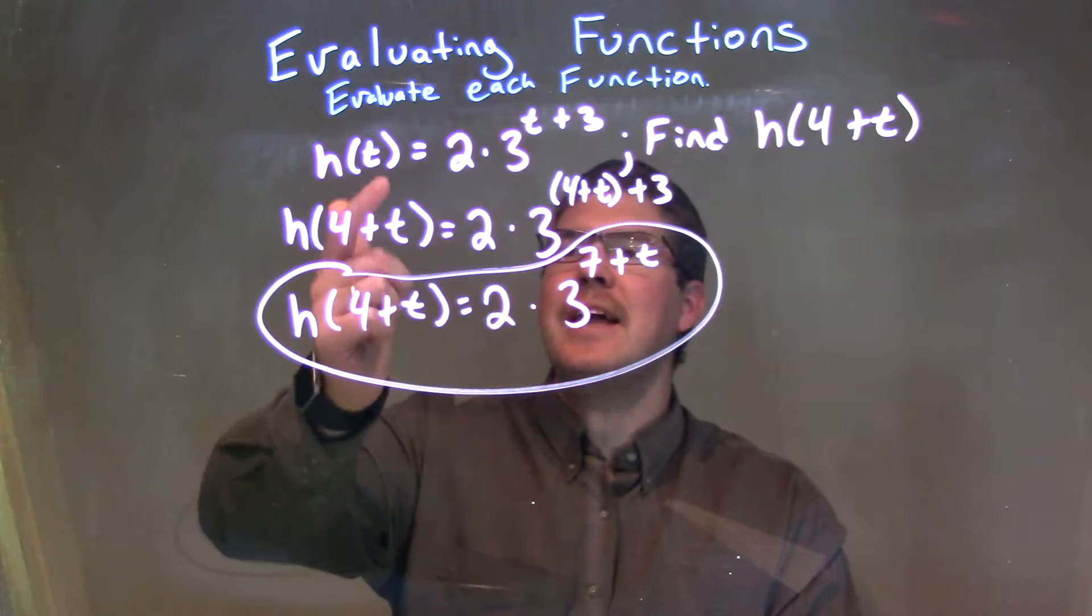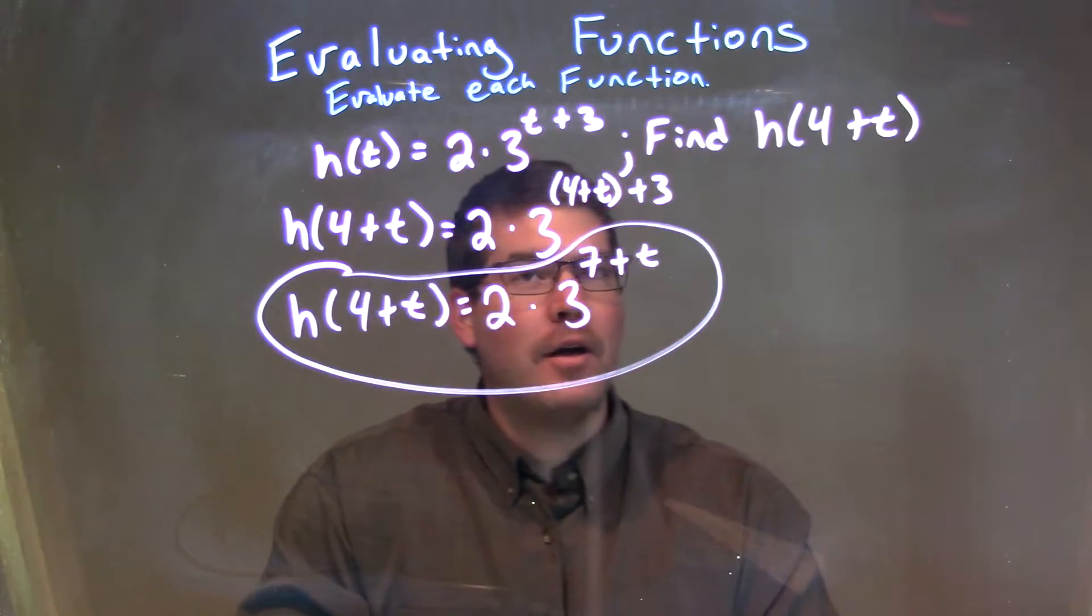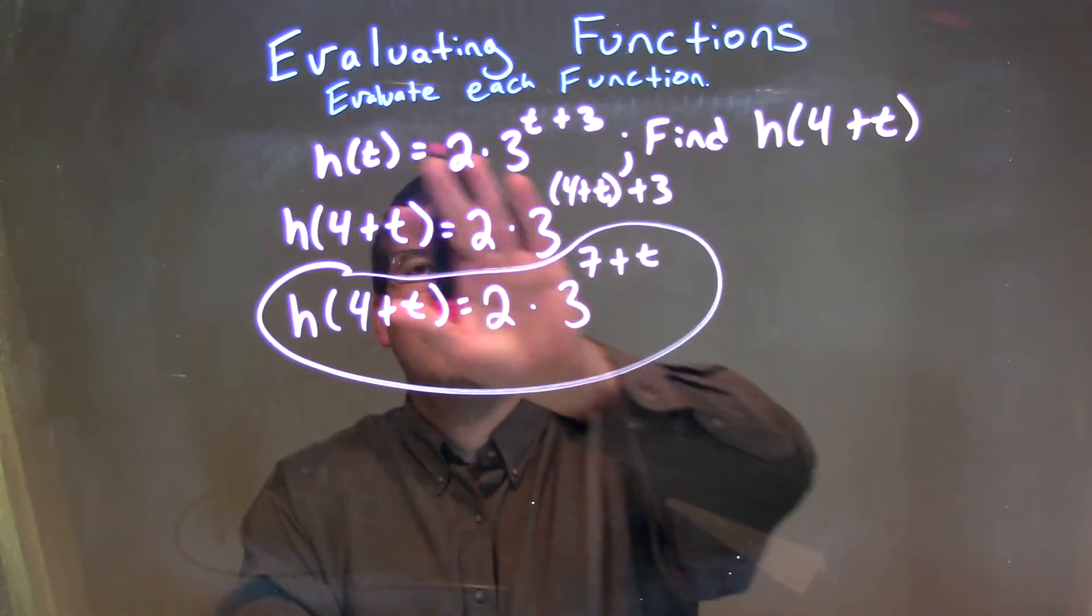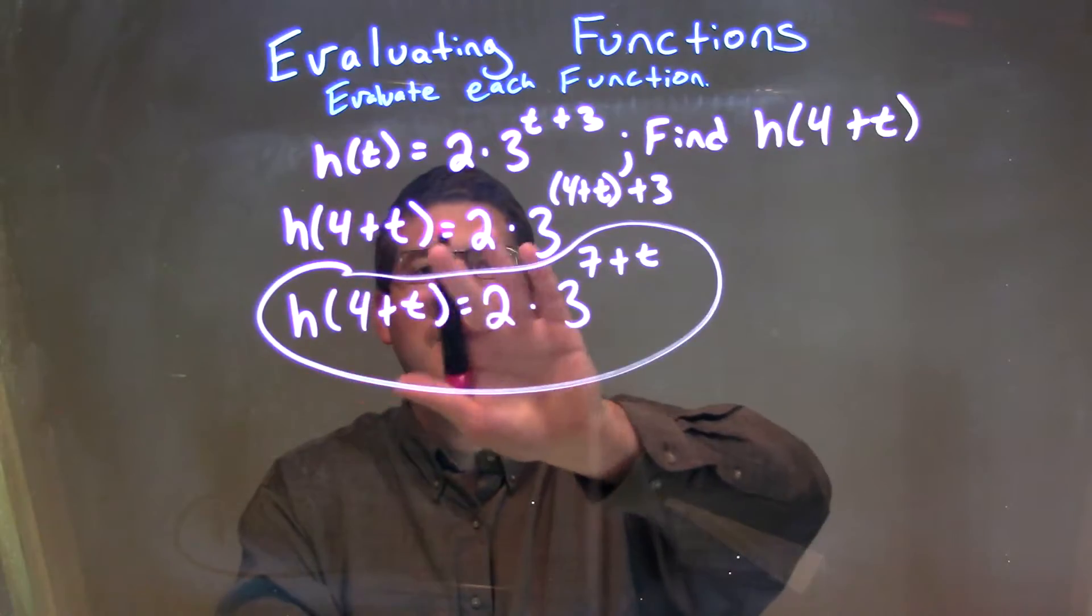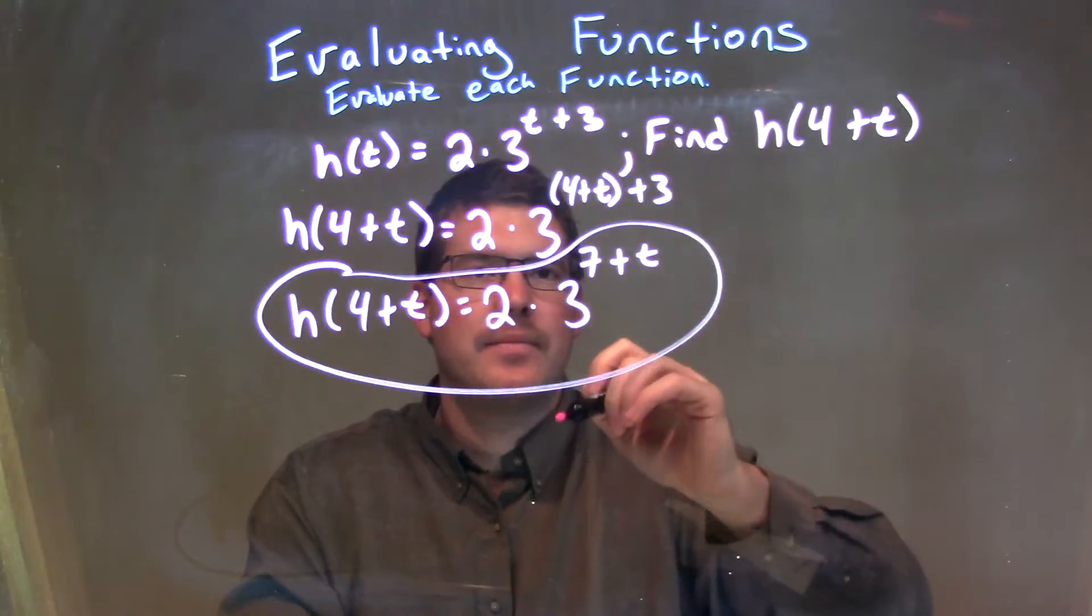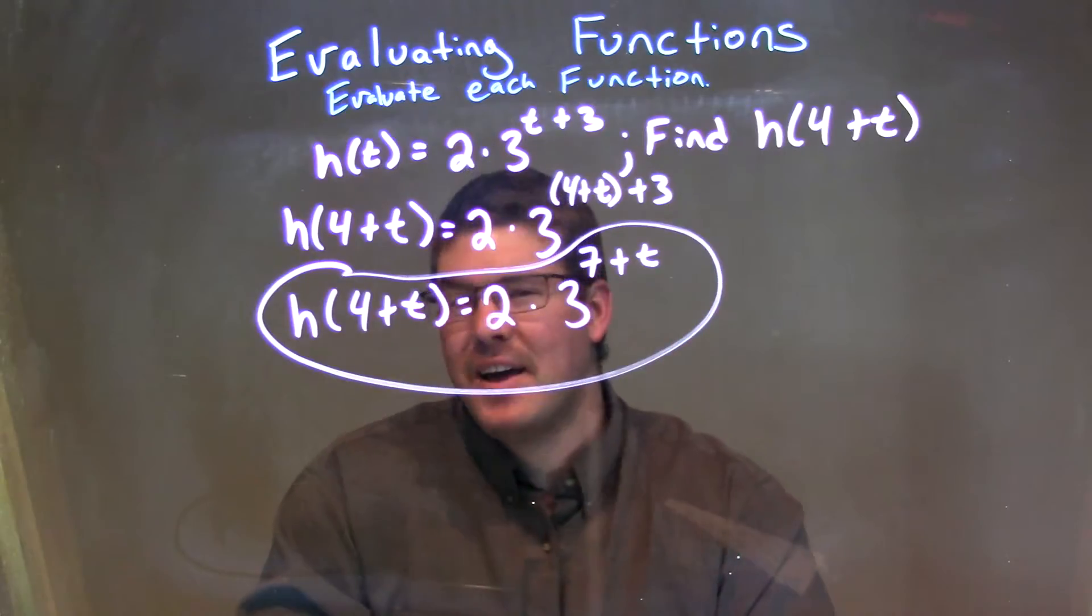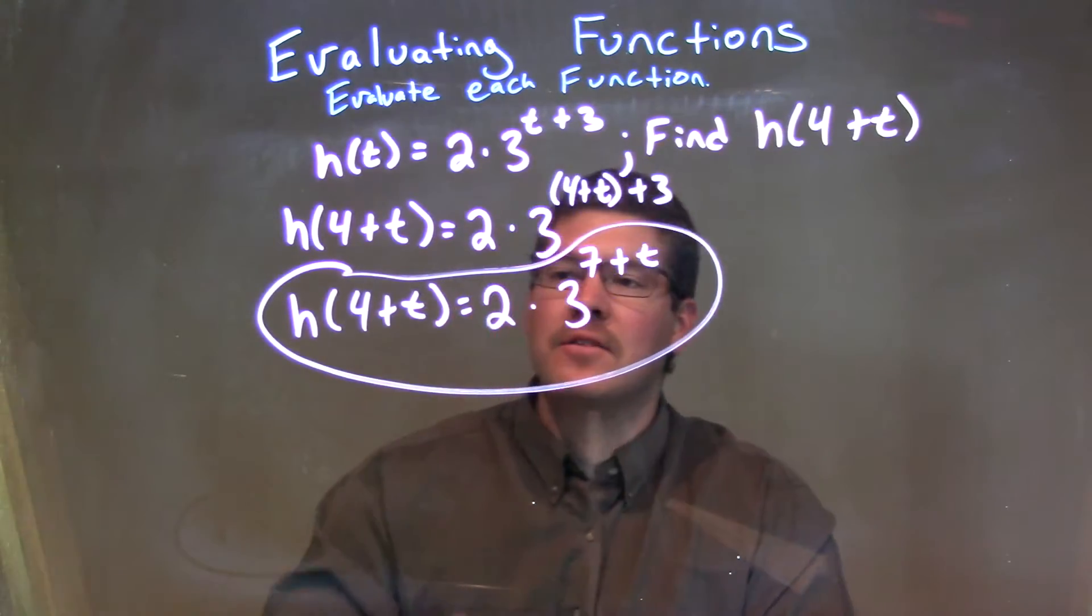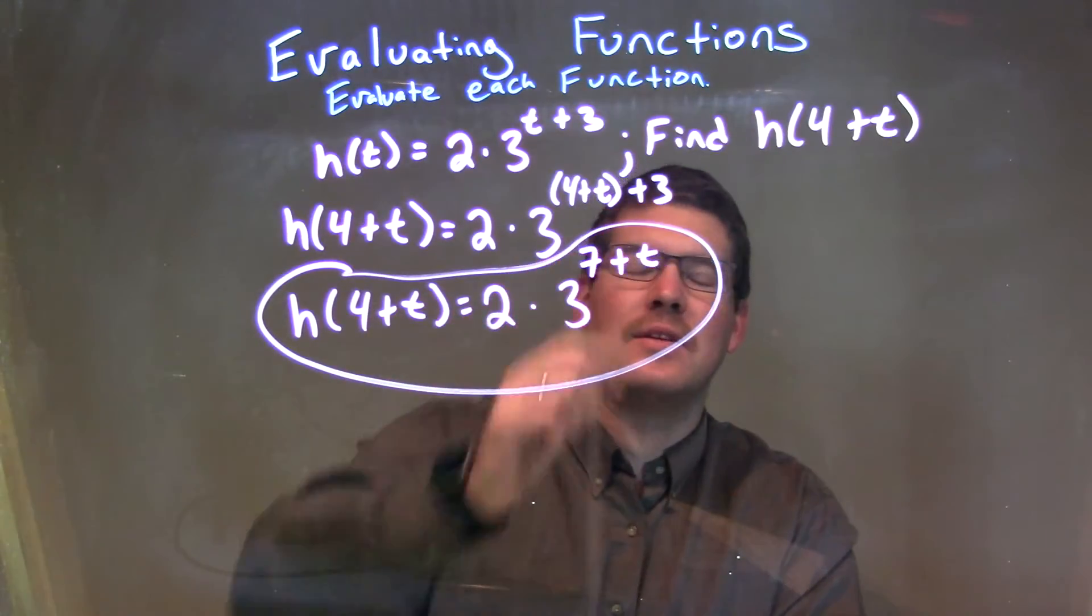So, let's recap. We're given h(t) is equal to 2 times 3 to the t plus 3 power, and we need to find h(4 + t). So, every single time we see a t, we plug in that 4 plus t. We have h(4 + t) equals 2 times 3 to the exponent 4 plus t plus 3. We simplify that exponent. The 3 and the 4 together come to get a 7, and after that, there's really nothing else that we can simplify. So, our final answer is h(4 + t) is equal to 2 times 3 to the 7 plus t power.